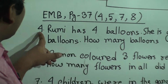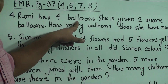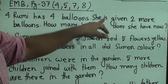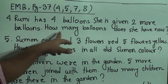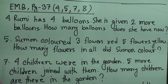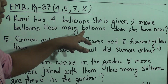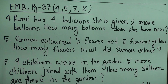Notice question number 4. Rumi has 4 balloons. She is given 2 more balloons. How many balloons does she have now? So dear students, I repeat: Rumi has 4 balloons and she is given 2 more balloons. How many balloons does she have now? We do addition because she is given 2 more balloons.